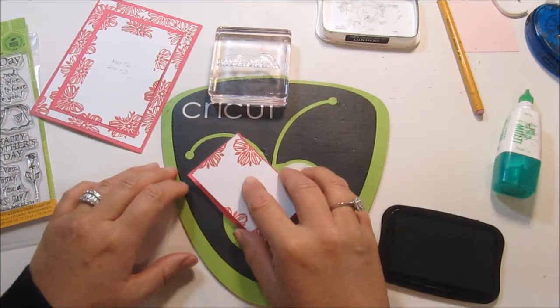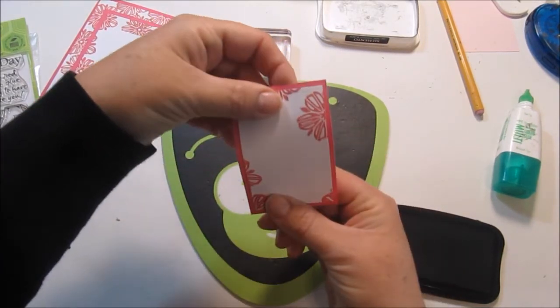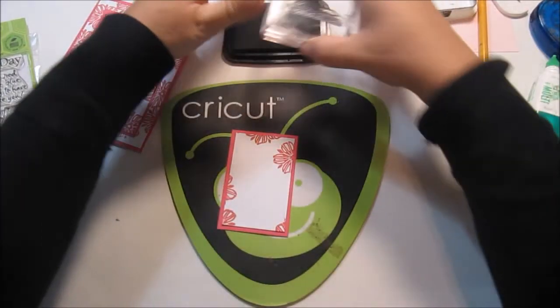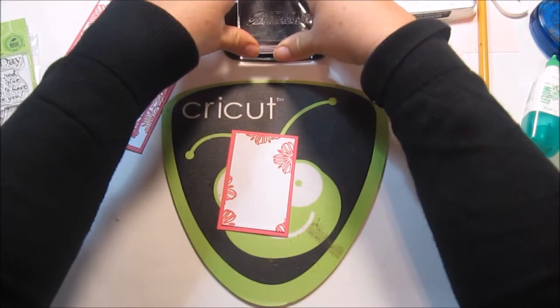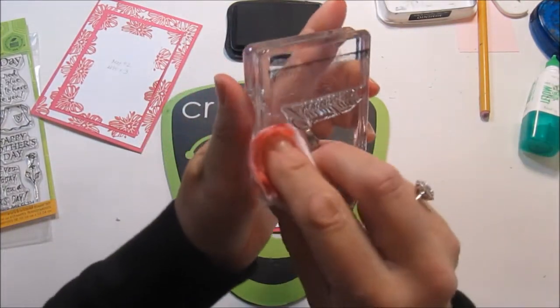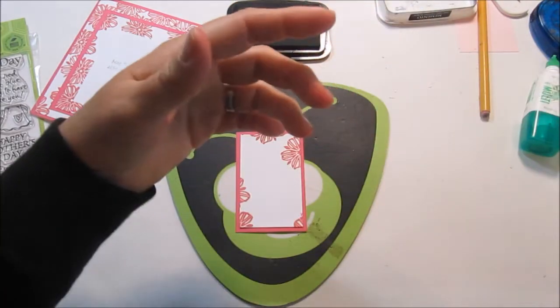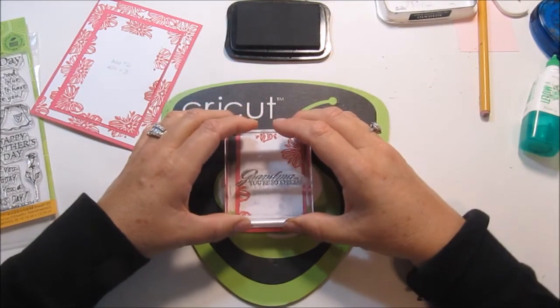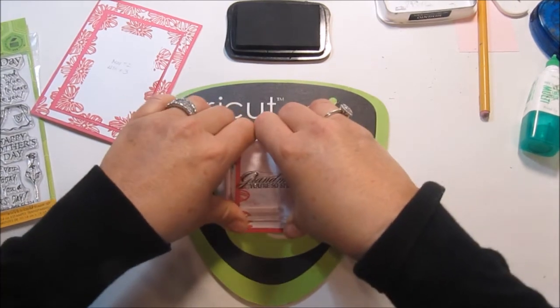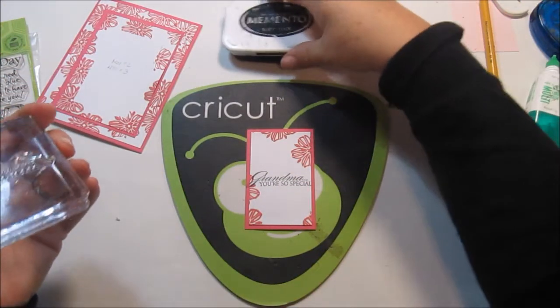You know, I'm even thinking if it goes over, it'll go over on the pink part. So let's go ahead and glue that down. Grandma you're so special - nope, I like it this way. Now I've had that stamp set for years. I'm sure it's still available but I have had it for a very long time. Wipe that off so it doesn't get on my card.